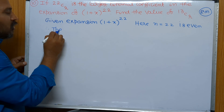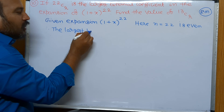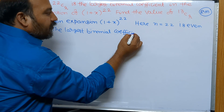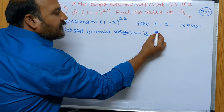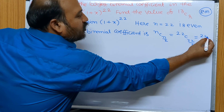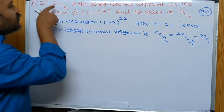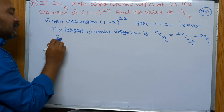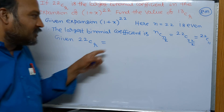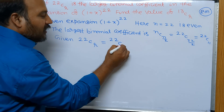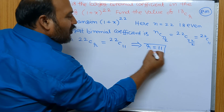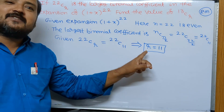Therefore the largest binomial coefficient is nC(n/2) = 22C(22/2) = 22C11. But it is given that 22Cr is the largest binomial coefficient, so 22Cr = 22C11. Since nCr = nCs implies r = s, therefore r = 11.